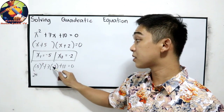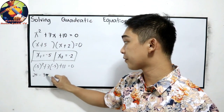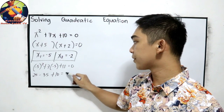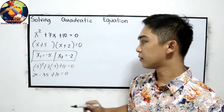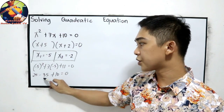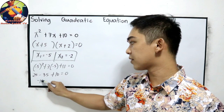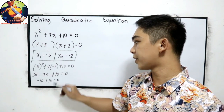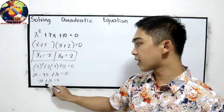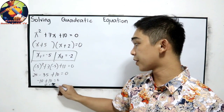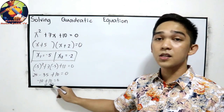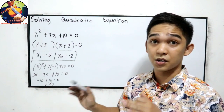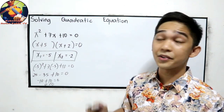7 times negative 5 is negative 35, plus 10, equals 0. So 25 minus 35 is negative 10, plus 10 equals 0. Negative 10 plus 10 gives 0 equals 0. If the equation is balanced — 0 equals 0 — then your answer is correct.